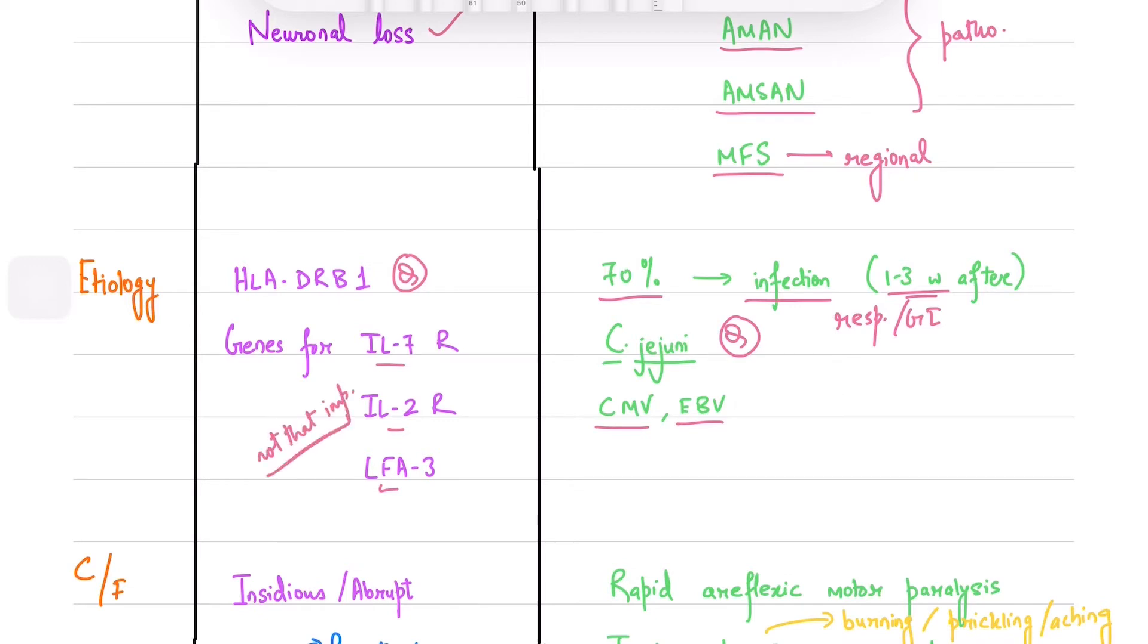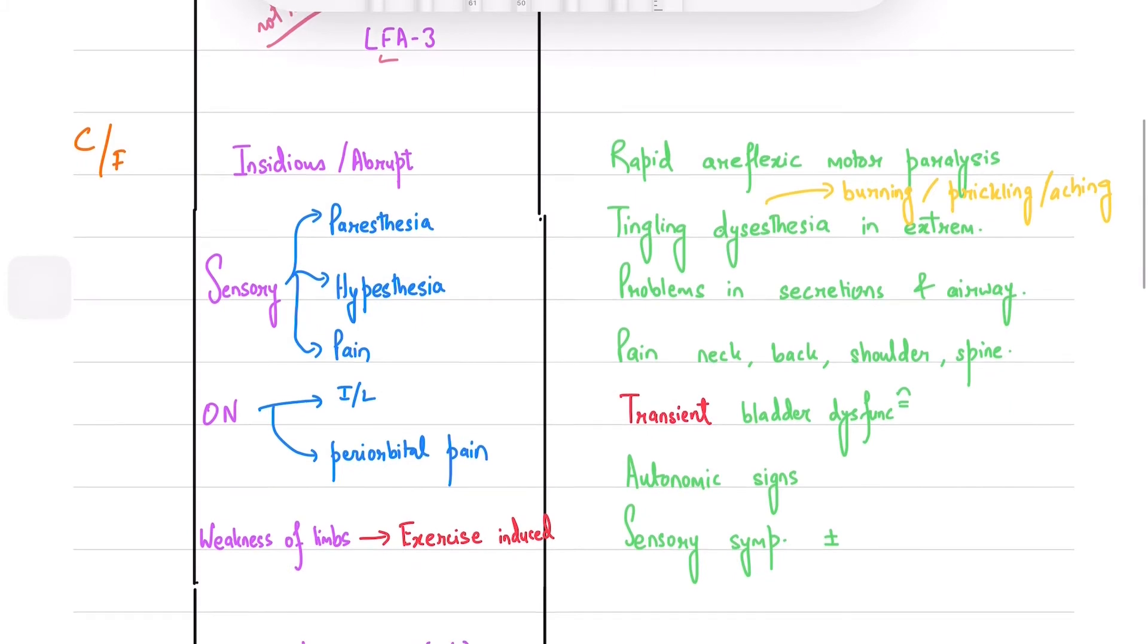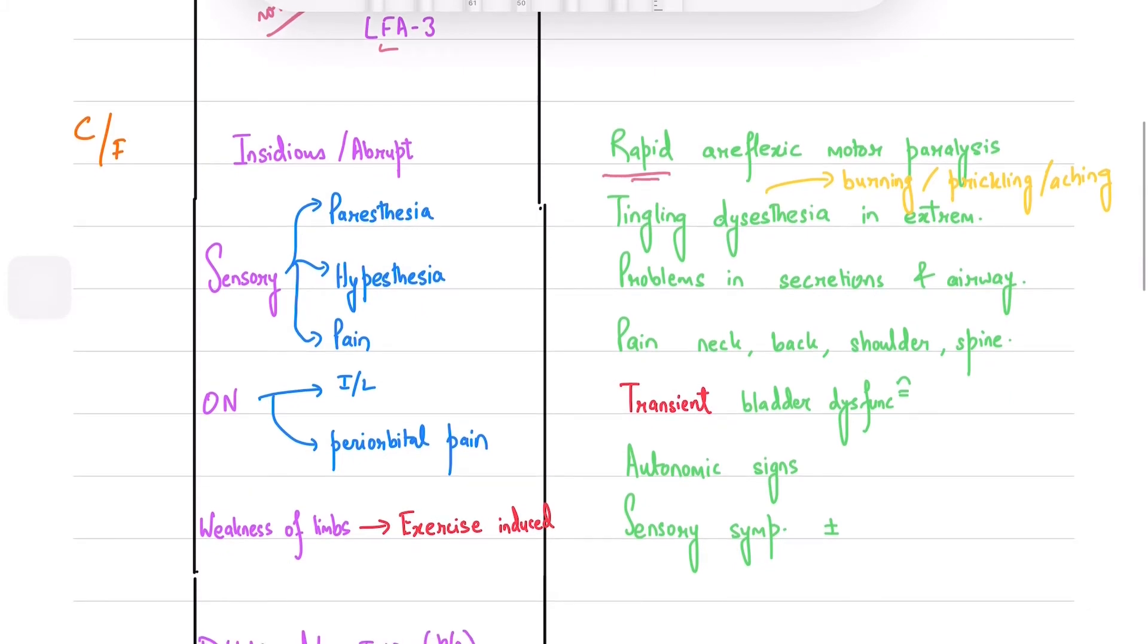Moving on to the clinical manifestations, GBS involves rapidly evolving areflexic motor paralysis which is ascending in nature. You will also see tingling dysesthesias in the extremities as the paralysis progresses. The lower cranial nerves are involved and thus the patient will have problems handling secretions and maintaining an open airway.